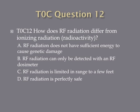Question twelve. How does RF radiation differ from ionizing radiation or radioactivity? A, RF radiation does not have sufficient energy to cause genetic damage. B, RF radiation can only be detected with an RF dosimeter. C, RF radiation is limited in range to a few feet. Or D, RF radiation is perfectly safe?